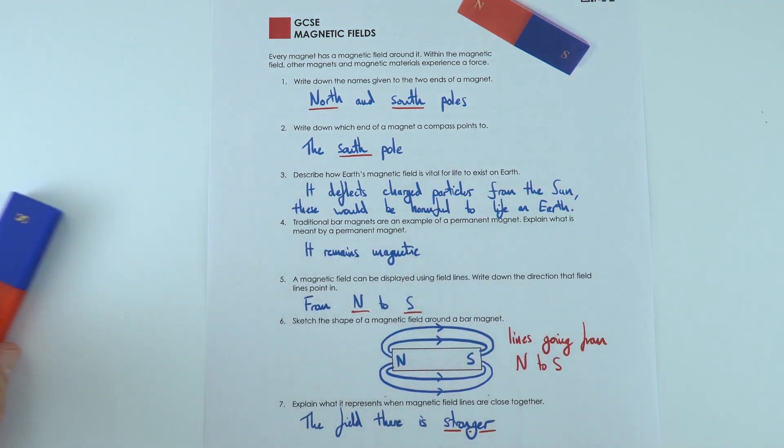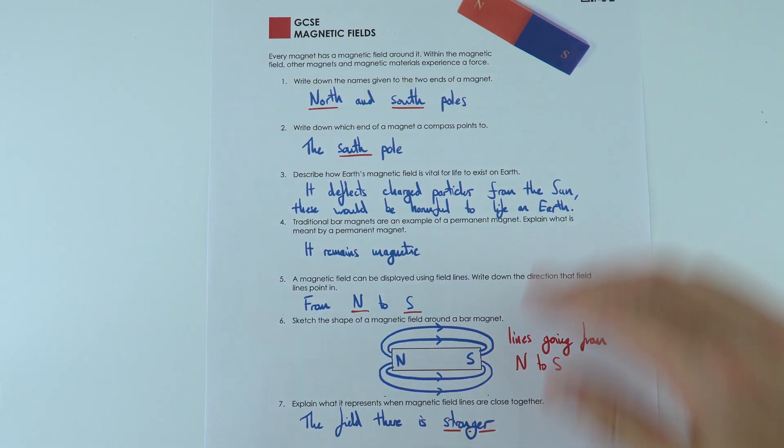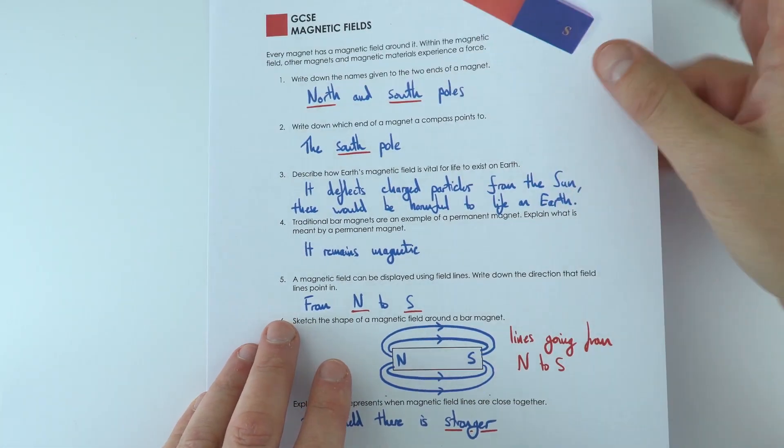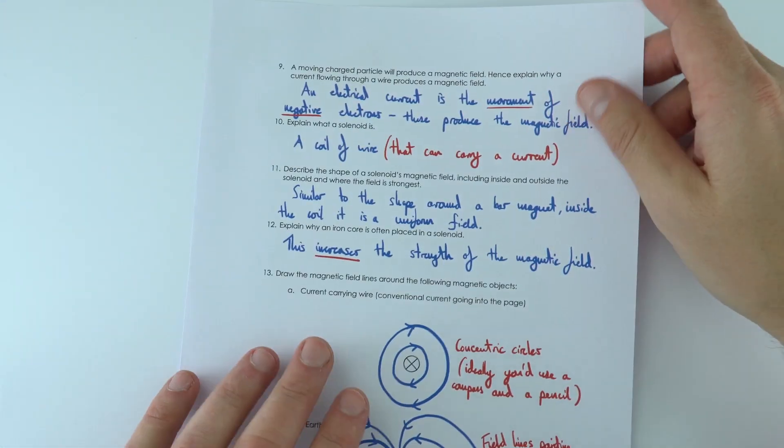But we also have a uniform field that we represent with equally spaced lines. And that's really important when it comes to looking at things like the motor effect and the generator effect.